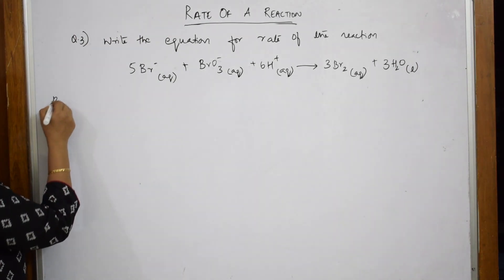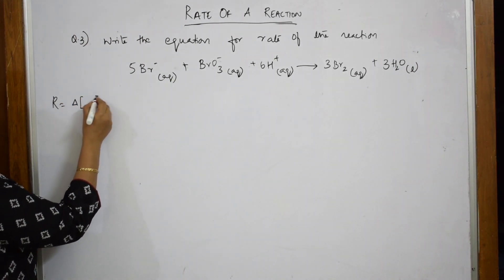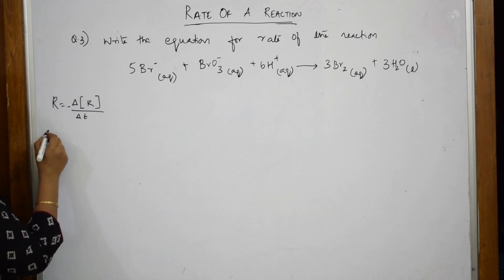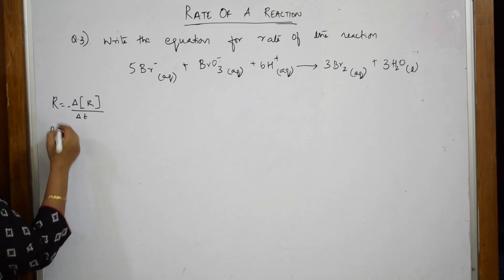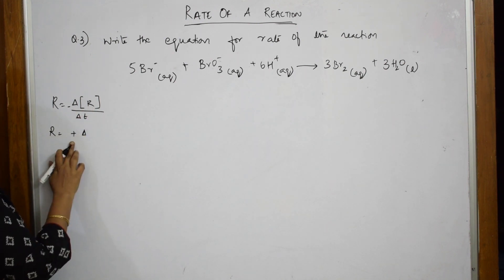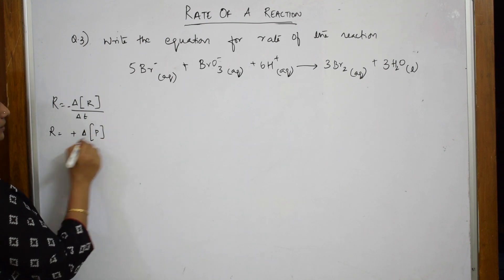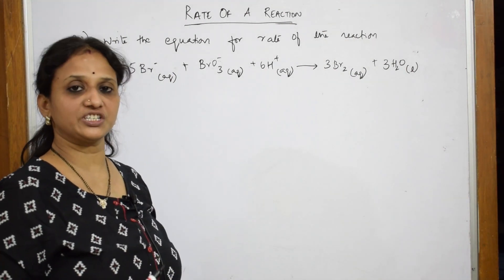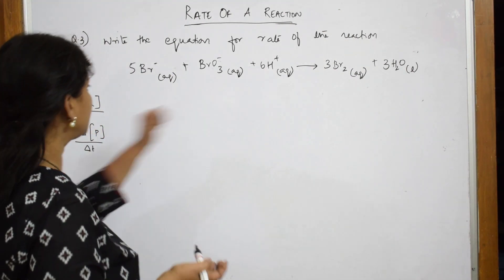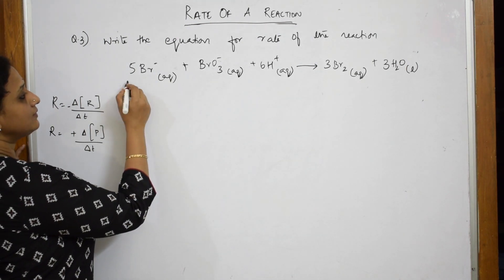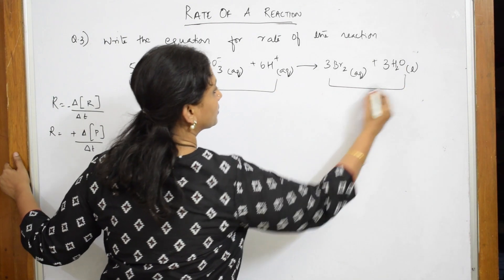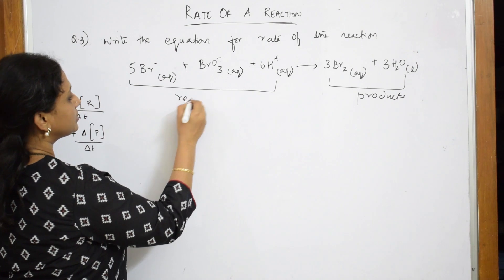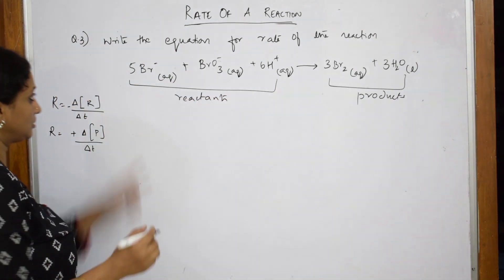Rate of a reaction is the change in concentration of the reactant per unit time — this is negative for reactants. For the product, it is the increase in concentration of the product per unit time, which is positive. They have given a particular reaction — this is one more way of questioning rate of reaction. All species on the left are reactants and all on the right are products, so wherever you find reactants put minus, and for products put plus.